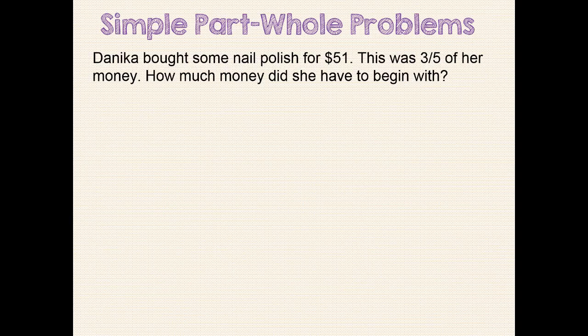Here is the first problem we will solve. Danica bought some nail polish for $51. This was 3 fifths of her money. How much money did she have to begin with? Since we need to find out how much money Danica had to begin with, our sentence statement can be: Danica had blank dollars to begin with.